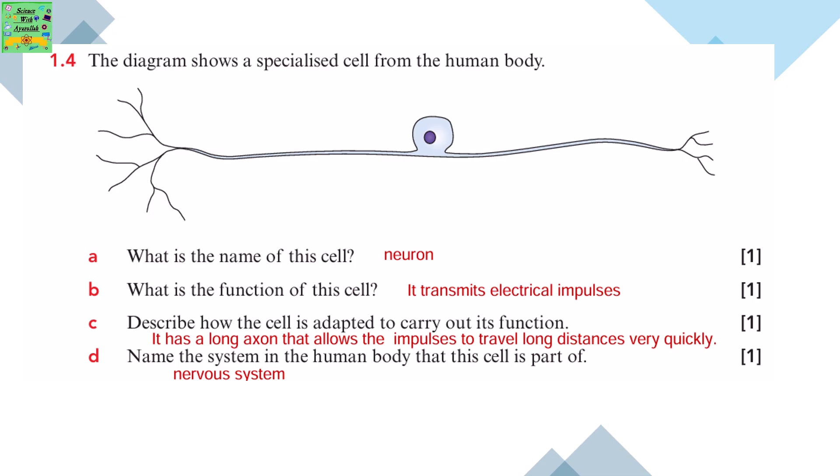The diagram shows a specialized cell from the human body. What is the name of this cell? Neuron. What is the function of this cell? It transmits electrical impulses. Describe how the cell is adapted to carry out its function. It has a long axon that allows the impulses to travel long distances very quickly. Name the system in the human body that this cell is part of - the nervous system.